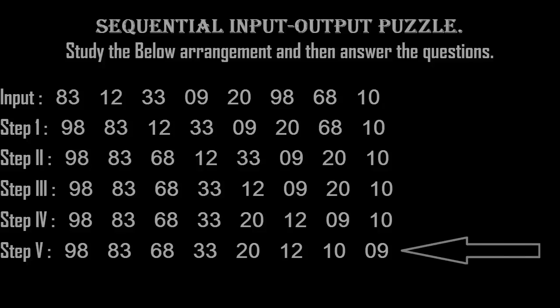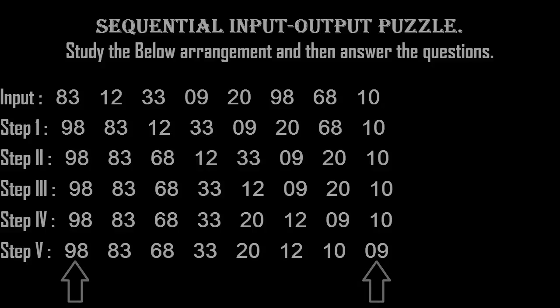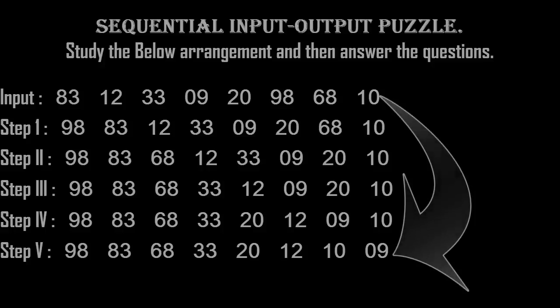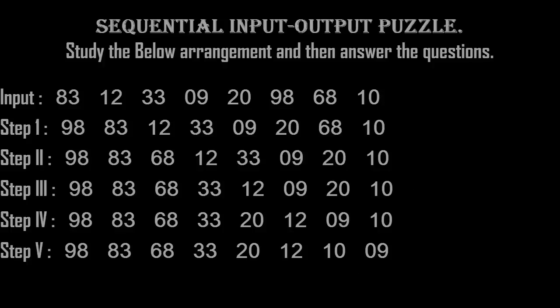Going through step one to step five, the arrangement follows some specific order and ends at step five. To find the hidden pattern, go to step five and observe the series. If you observe the series, it's in descending order with the highest number at the first place and the lowest at the last. So we have found the hidden pattern: the scrambled numbers in the input need to be arranged in descending order step by step.